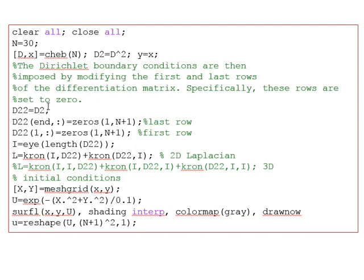We set the boundary conditions: the first and last rows of D2 are set to zero (Dirichlet condition), so D2(1,:) = 0 and D2(end,:) = 0. We define the identity matrix I of size (N+1) by (N+1), then compute the Laplacian operator using the kron command: L = kron(I, D2) + kron(D2, I). This Laplacian matrix already incorporates the boundary conditions.